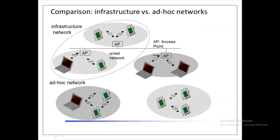Nodes from two separate networks shown in the figure cannot communicate with each other if they are not within the same radio range. They are not communicating with each other unless they are in the same radio range, at which point they are able to communicate.